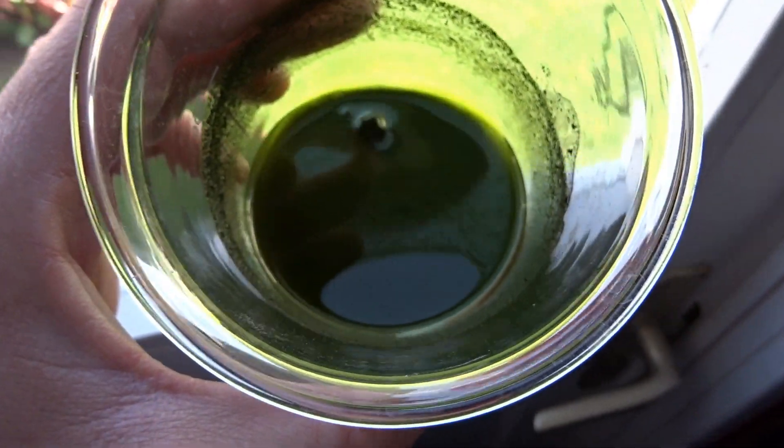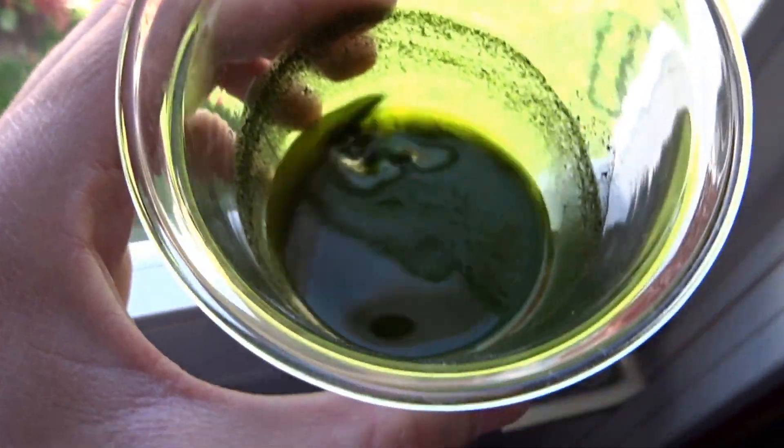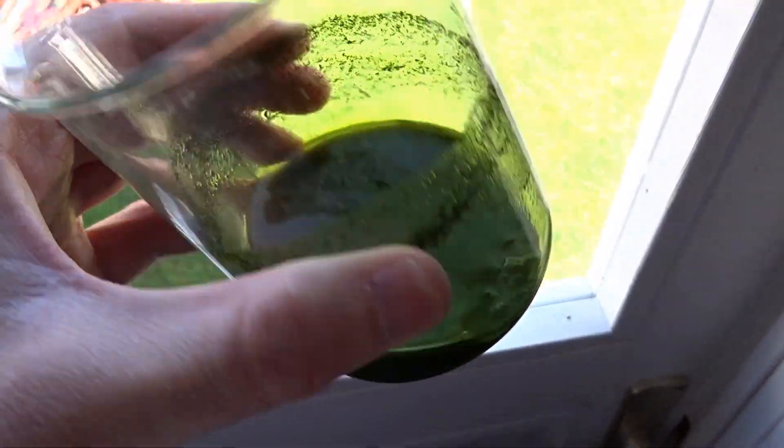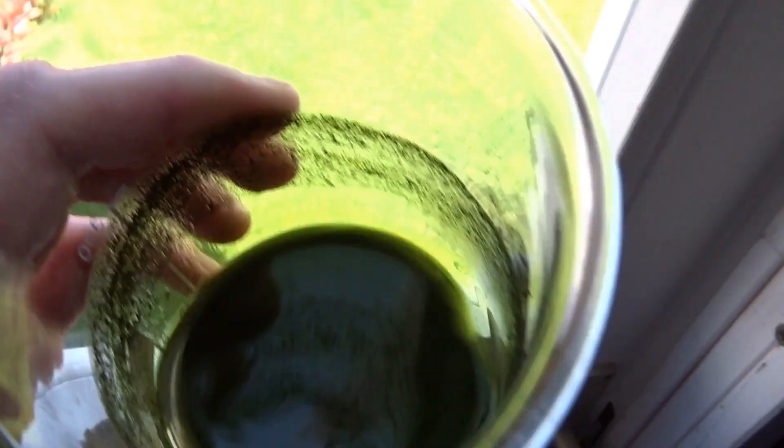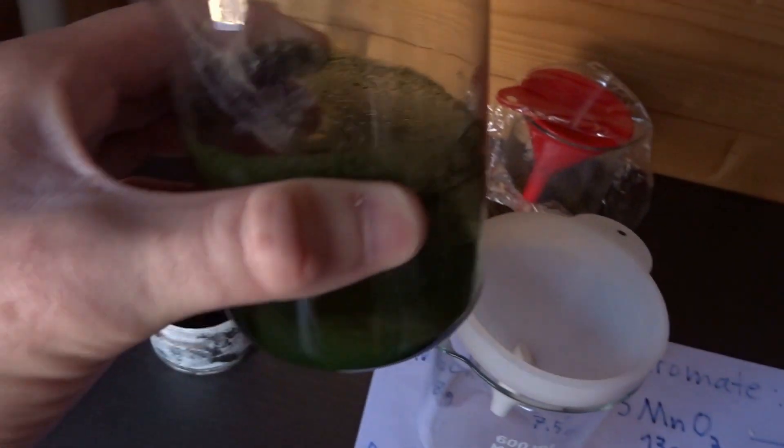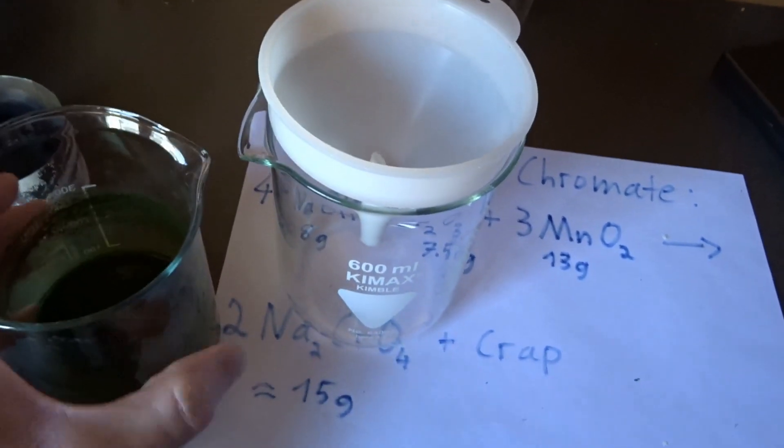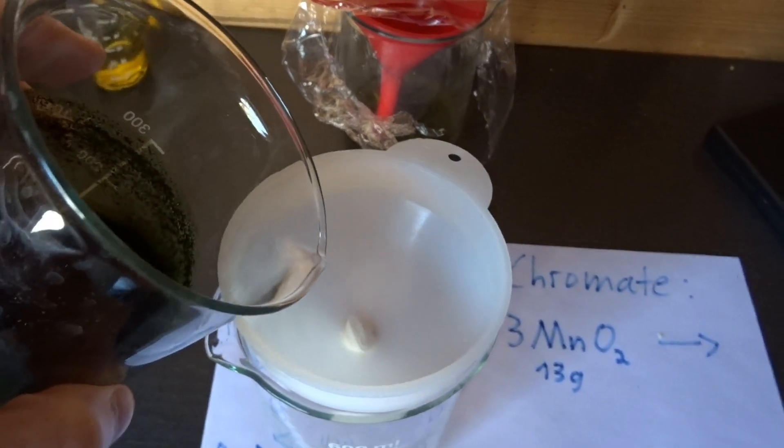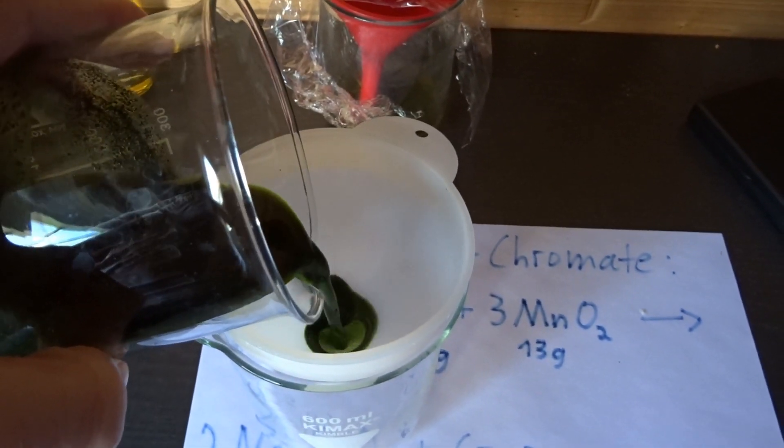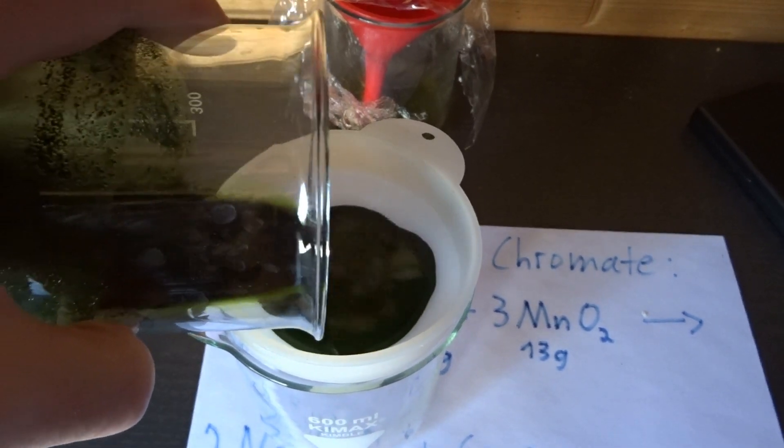So I torched it. I dissolved it in water. And it's a mixture of yellow and green. Let's see what I can get out of this green mess. A bit of yellow would be nice. Some chromates. And for that I need to filter off all the junk.